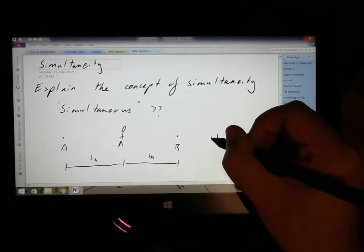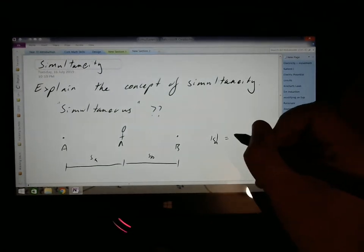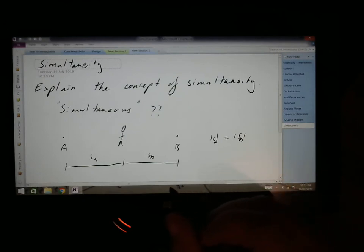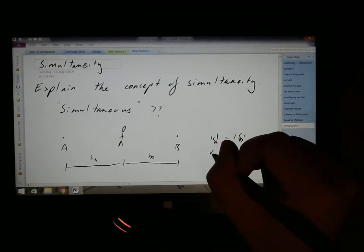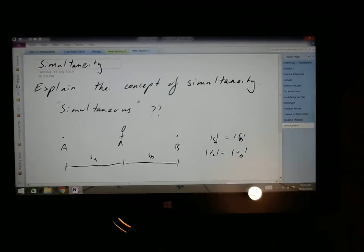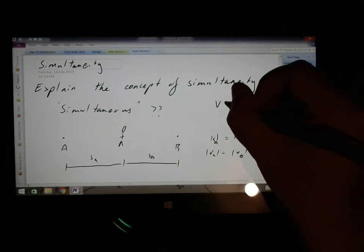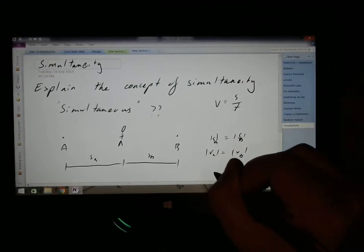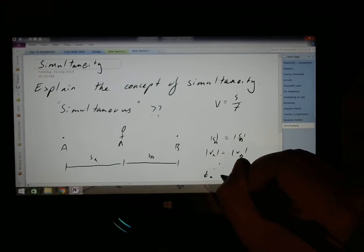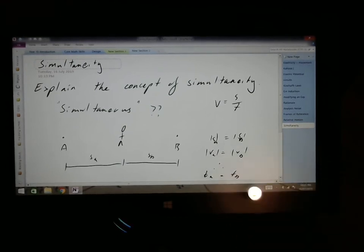If the size of the displacement of A equals the size of the displacement of B, and the velocity from A equals the velocity from B, or the magnitude, because we've got to worry about directions here, well, being as we know, our velocity equation of velocity equals displacement over time, well, that stands to reason that the time for A should equal the time for B, because they're on the same velocity, and they've gone the same distance, then the time should be the same.